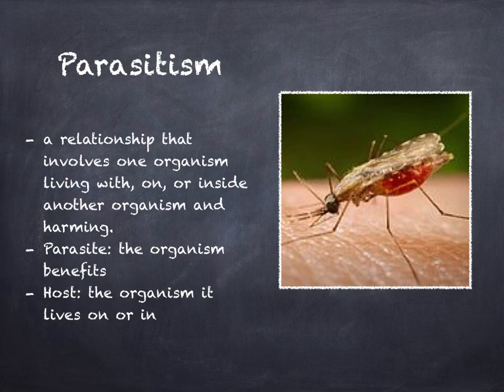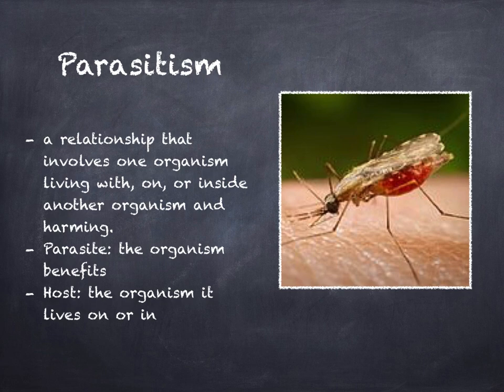Parasitism: Many family pets get treated with medication to prevent tick and flea bites. Without treatment, pets can suffer from severe health problems as a result of these bites. A relationship that involves one organism living with, on, or inside another organism and harming it is called parasitism. The organism that benefits is called a parasite. The organism it lives on or in is called a host. The parasite is usually smaller than the host. In a parasitic relationship, the parasite benefits while the host is harmed. Unlike a predator, a parasite does not usually kill the organism it feeds on. If the host dies, the parasite could lose its source of food or shelter. Some parasites, like fleas and ticks, have adaptations that enable them to attach to their host and feed on its blood.